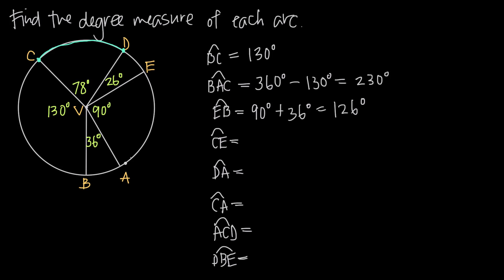Notice that when we have multiple interior angle measures, we can just add them together to get the arc that spans from one edge to another. For arc CE, going from C through D to E, we include angle CVD and angle DVE. So we add 78 degrees to 26 degrees and get 104 degrees.